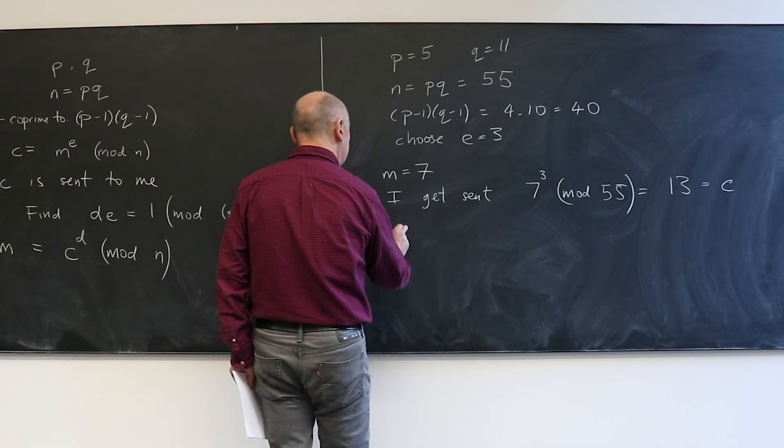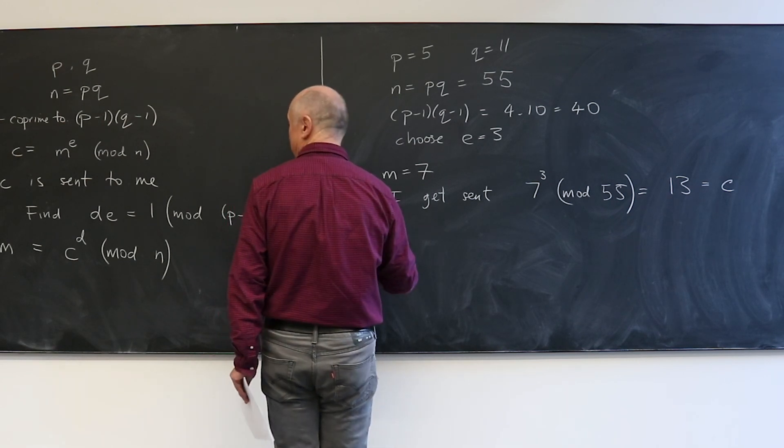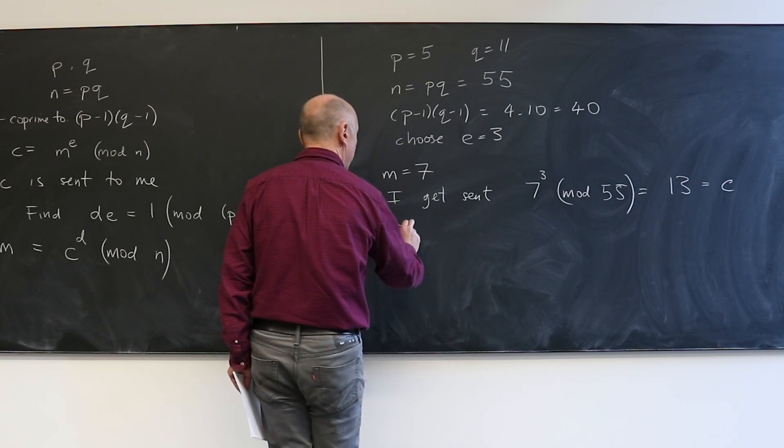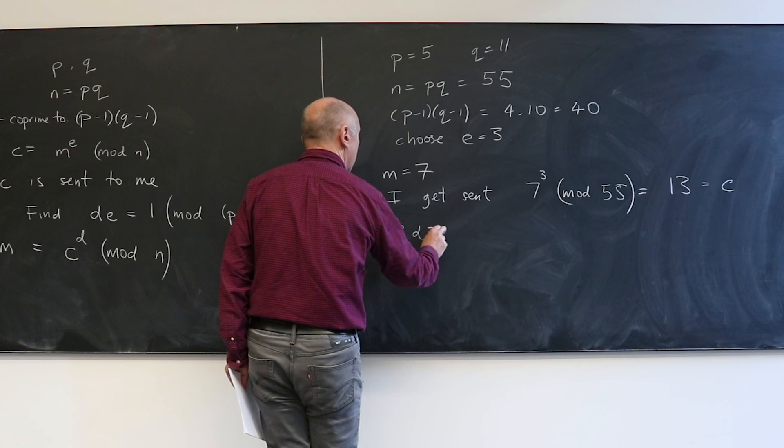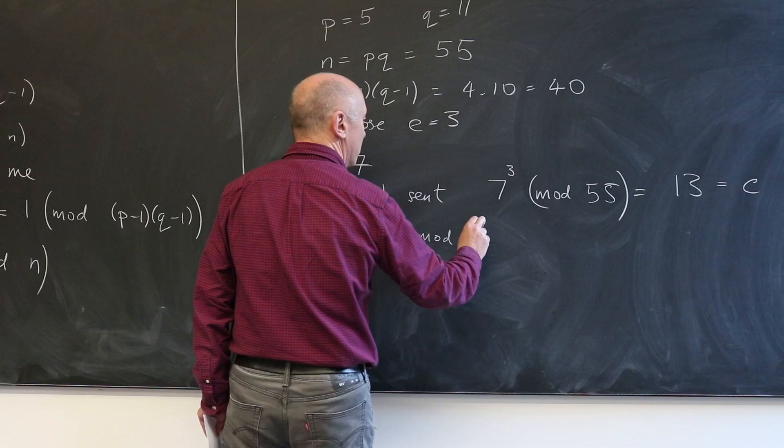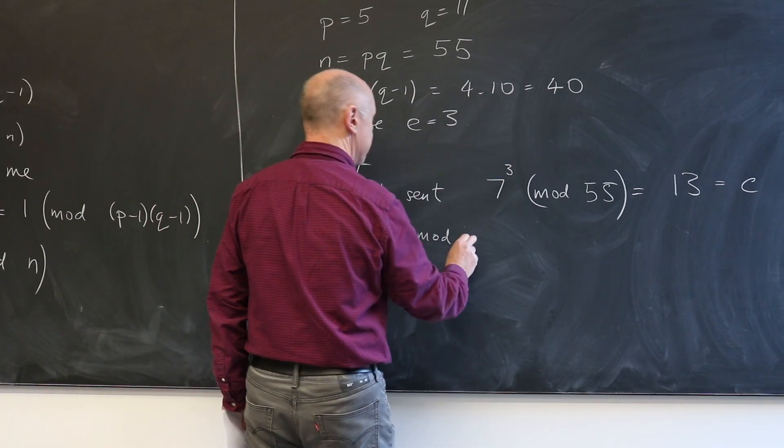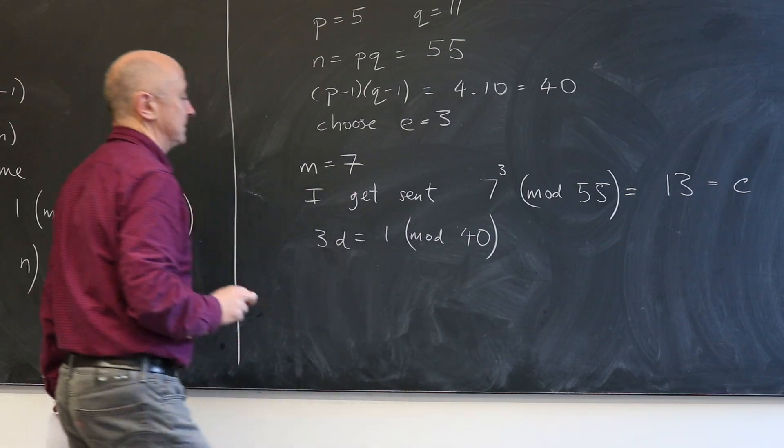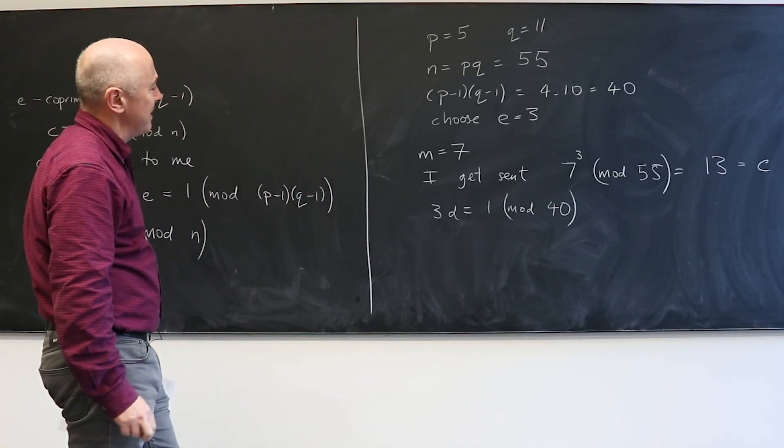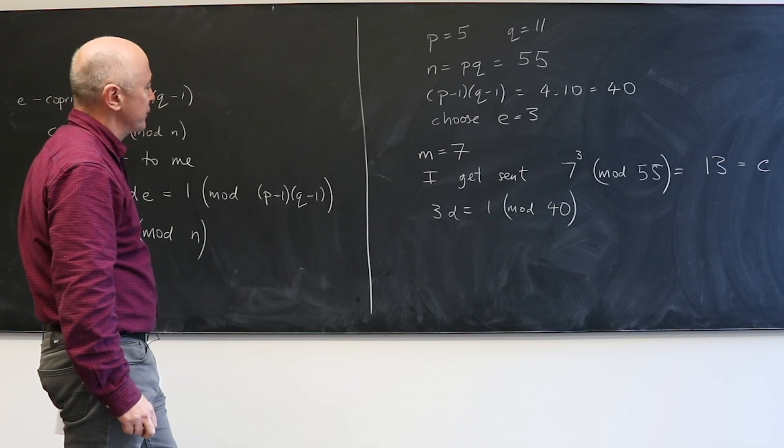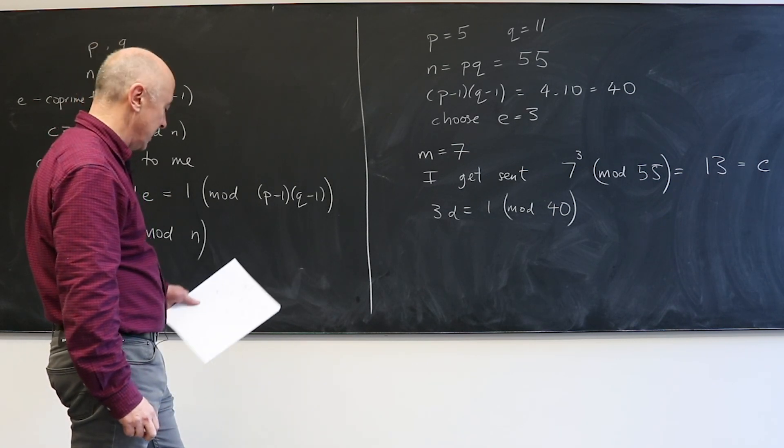So how do I go from 13 back to 7? Well, first of all I need my D. I need to solve D times E, D times 3, so 3D is 1 modulo 40.